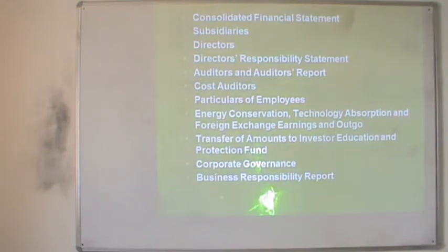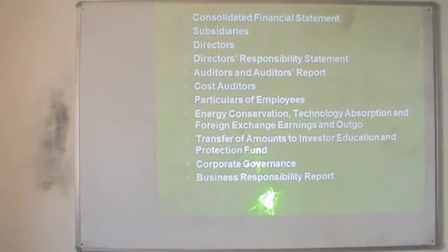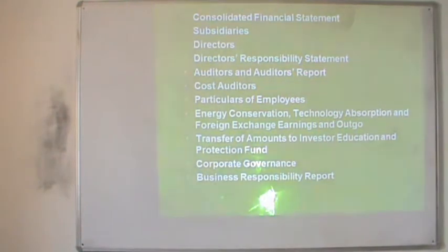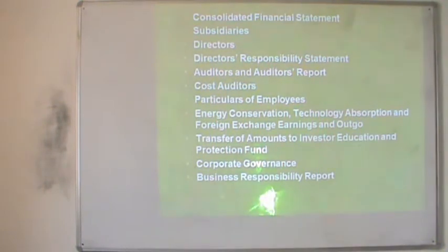Further, the company discusses the consolidated financial statement — how it is prepared and in which format it works. Thereafter, details of subsidiary companies are also given to investors and other stakeholders. The directors' responsibility statement is also shown, covering how the directors have worked for the company and made plans for its future. Thereafter the company presents the names of the auditors and their audit report, including the name of the chartered accounting firm that conducted the audit.